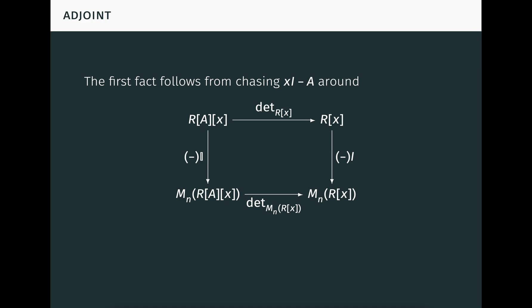The first fact follows from chasing the characteristic matrix of A around this diagram. Here R[A][x] denotes the ring of polynomials in X with coefficients in R[A], each of which can be viewed as a matrix with polynomial entries. The arrows going down make scalar matrices out of scalars. Again, the diagram commutes because the determinant is a natural transformation. The second fact follows from the adjoint relation on the previous slide. I leave it to you to think through the details of both of these facts.